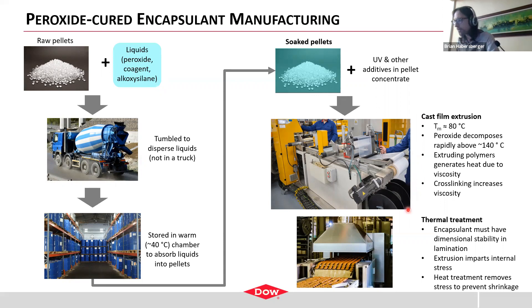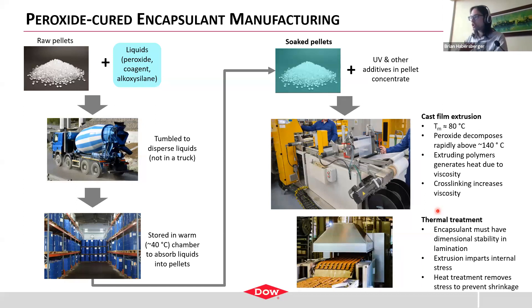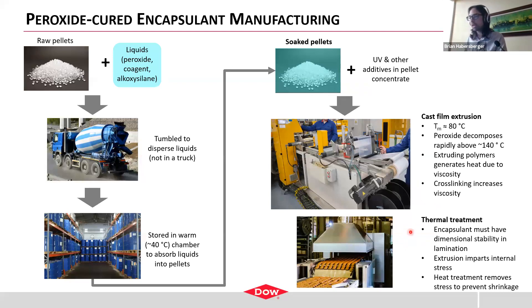After extrusion there is a thermal treatment step. The encapsulant passes through a heat tunnel after extrusion. The encapsulant needs dimensional stability when laminated — you don't want it to shrink during lamination. The extrusion process imparts stress into the film, so you need to remove that stress so that shrinkage doesn't happen in a laminator. This secondary heat treatment step prevents the encapsulant film from shrinking later.